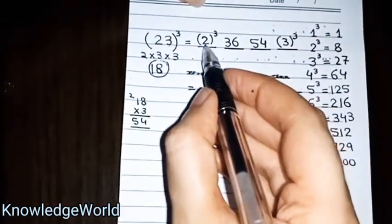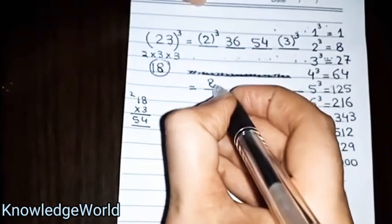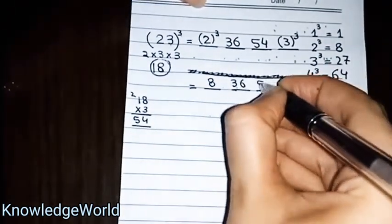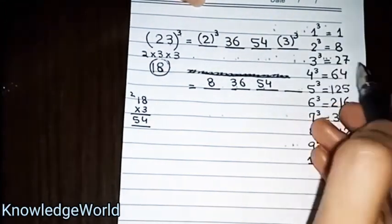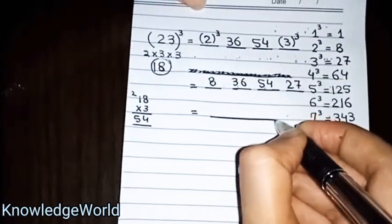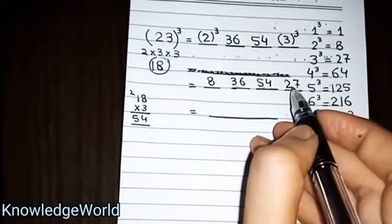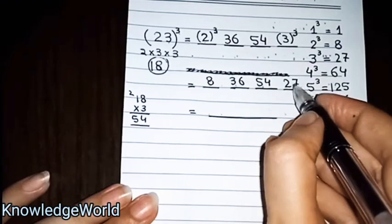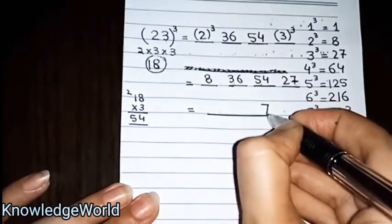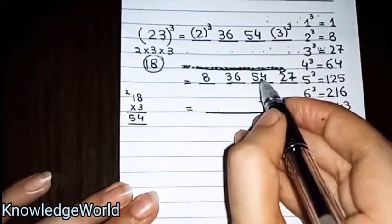We will open the cubes. 2 cubed is 8. We have 8, 36, and 54. 3 cubed is 27. In the answer, we have the unit place digits. In the unit place, we have 7. The remaining 2, we add to 54.